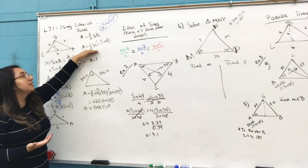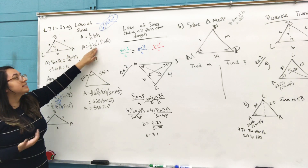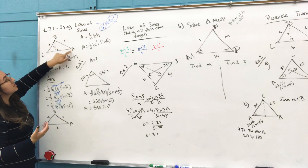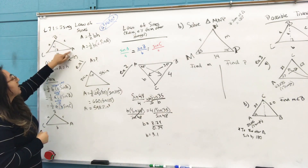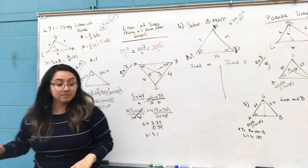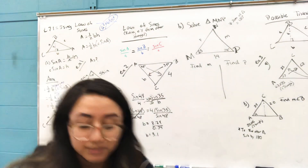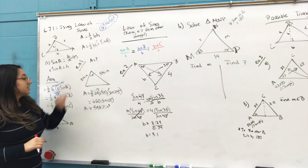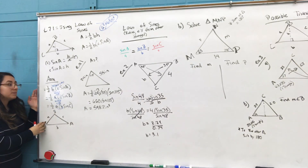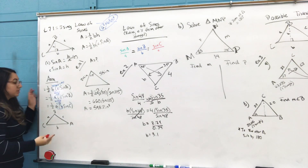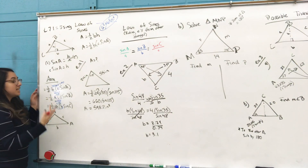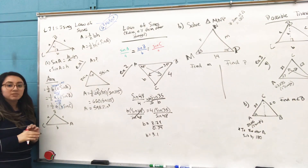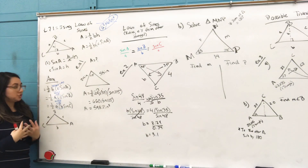Going back to finding the area: area = ½ × base × height. Your new height is now the hypotenuse times the sine of the opposite angle. There are different equations for the area because there are three separate angles — one half times b times c times sine of A, one half times a times c times sine of B, and so on. You don't have to memorize any of these.